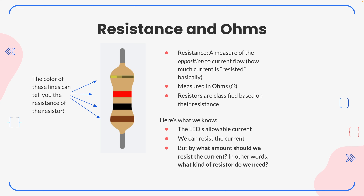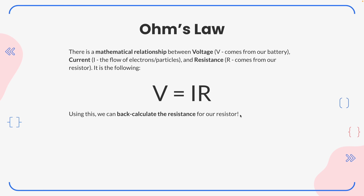Here's what we know: the LED's allowable current is 20 milliamps, and we can resist the current from the battery. But by how much do we need to resist it — what kind of resistor do we need? This is where we get into some math. There's a law called Ohm's Law, which states there's a mathematical relationship between voltage — from our 9-volt battery — current (represented by the variable I, the flow of charged particles), and resistance (abbreviated R, from our resistor).